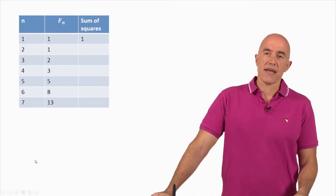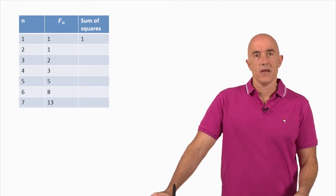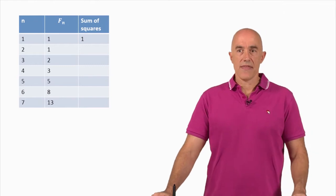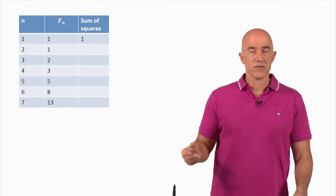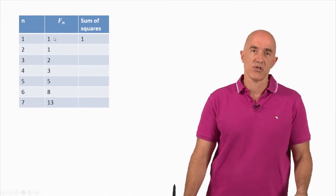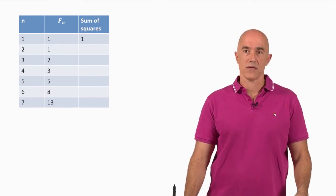Here, I write down the first seven Fibonacci numbers, n equals 1 through 7. And then the sum of the squares. So the first entry is just F sub n, F sub 1 squared, which is just 1 squared, is 1.